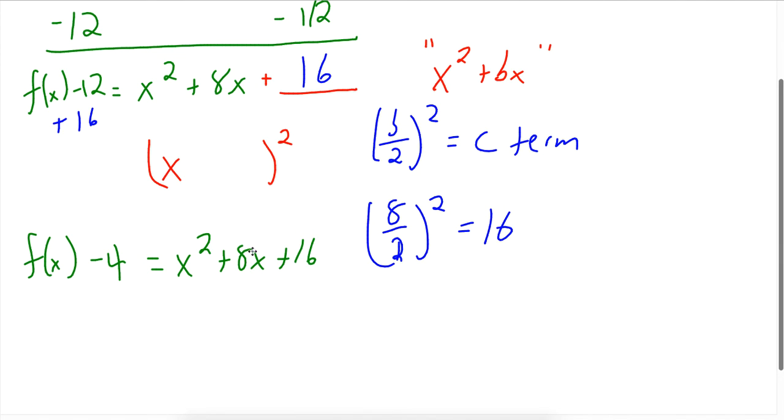Now, this is nice because this factors pretty nicely into a perfect square, as is the goal. So this is going to equal x plus 4 squared. If I square 4, I get 16. If I add a 4x and a 4x, I get an 8x. So that's where this comes from.